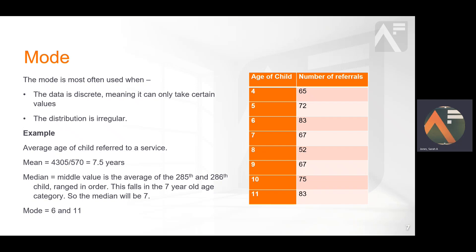The mode is most appropriate when the data is discrete, that means it can only take certain values such as whole numbers. It is also most appropriate when the data is irregularly distributed, such as when there are two or more areas where the measures cluster.